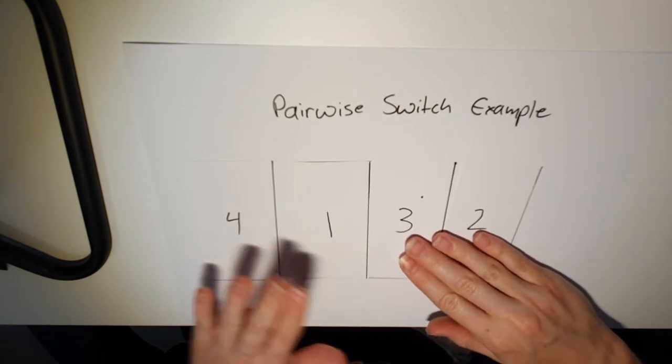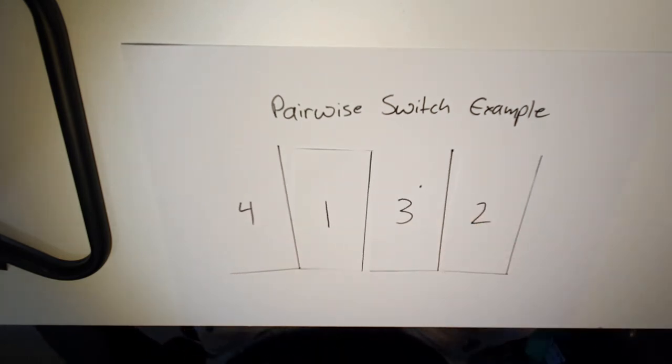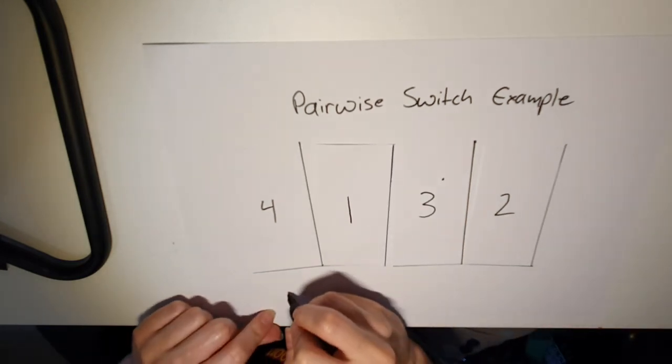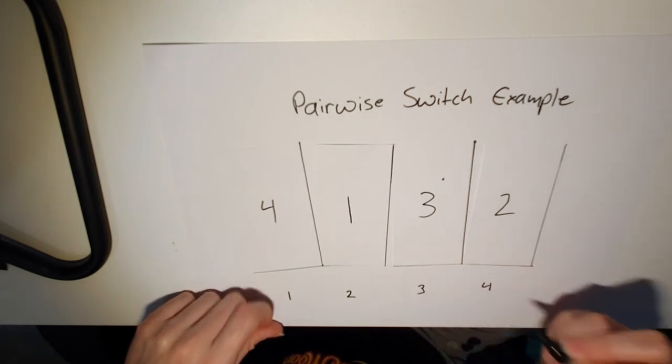So for the example, these are our cards. Now we want them to be in ascending order, which means at the end of our switches, we want them to say one, two, three, and then four.